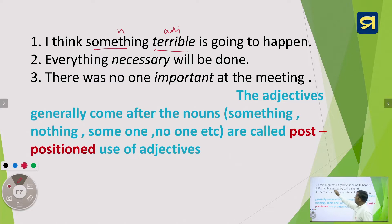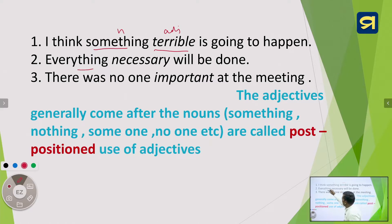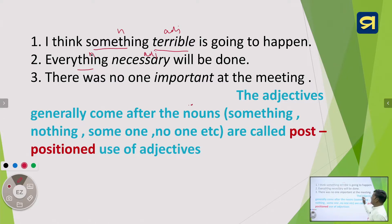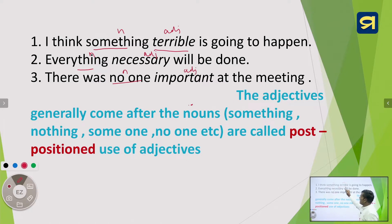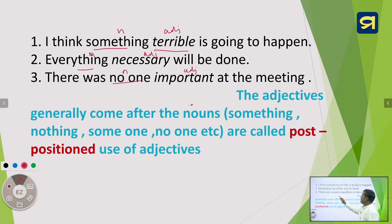Similarly, in 'Everything necessary will be done,' everything is the noun and necessary is the adjective. In 'There was no one important at the meeting,' no one is the noun and important is the adjective. These adjectives are used after the nouns: something, everything, no one.